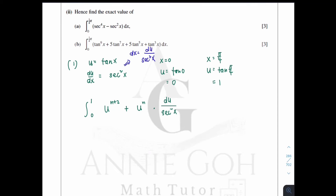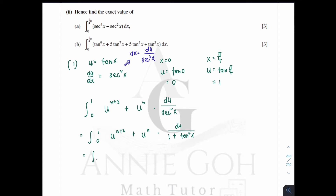We need to express everything in terms of u before integrating, but there is still a sec²x present. To eliminate it, we use the identity sec²x = 1 + tan²x, and then substitute tan²x = u², so the denominator becomes 1 + u².